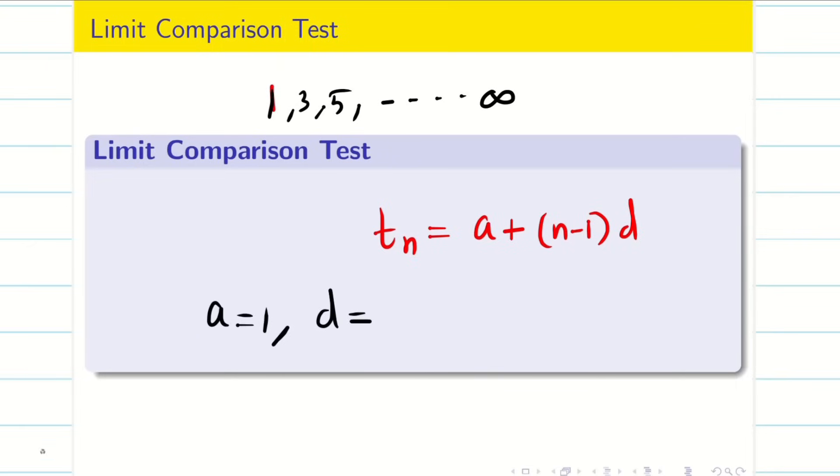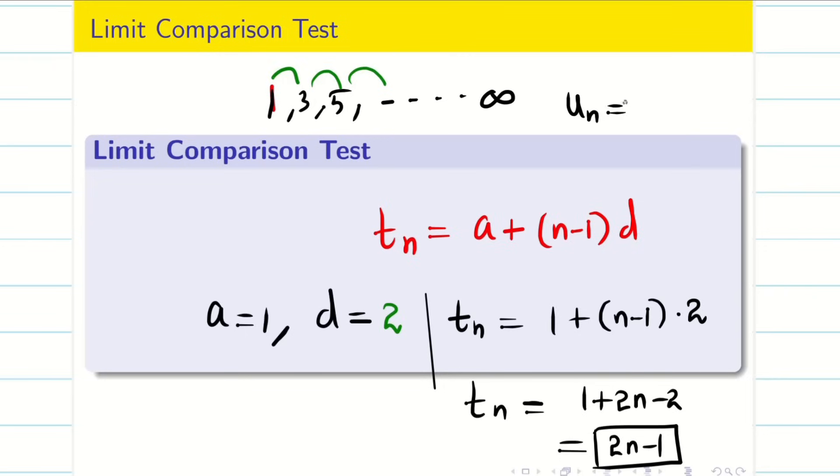The difference between any two consecutive terms, you can take anything: 1, 3 or 3, 5 or 5, 7. You will be getting D equal to 2. Therefore, my Tn is going to be 1 plus n minus 1 times 2. So, 1 plus 2n minus 2, that is going to be 2n minus 1. So, this is the nth term. I will say un is equal to 2n minus 1. This basic is needed to solve the problem.